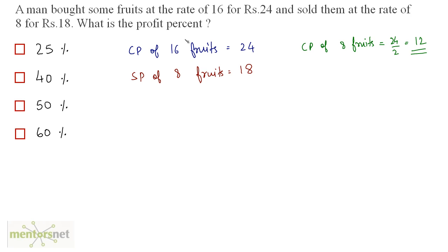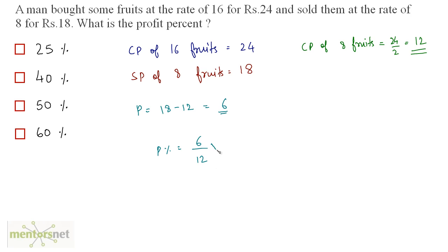Now we calculate the profit and then the profit percentage. Profit equals selling price of 8 fruits minus cost price of 8 fruits, so 18 minus 12, which is 6. Profit percentage equals profit divided by cost price times 100, so 6 divided by 12 times 100, which is 1/2 times 100, equal to 50%.